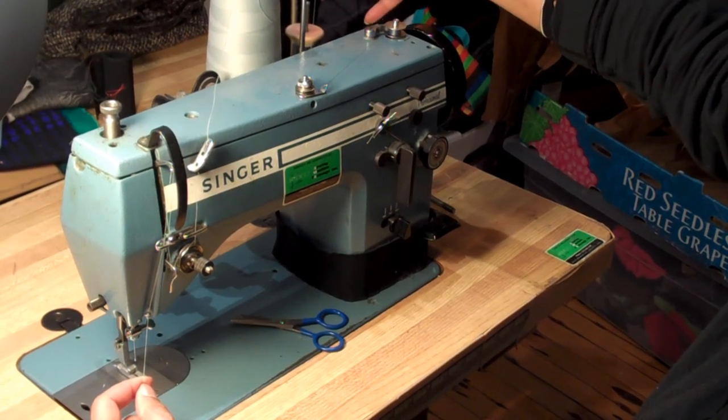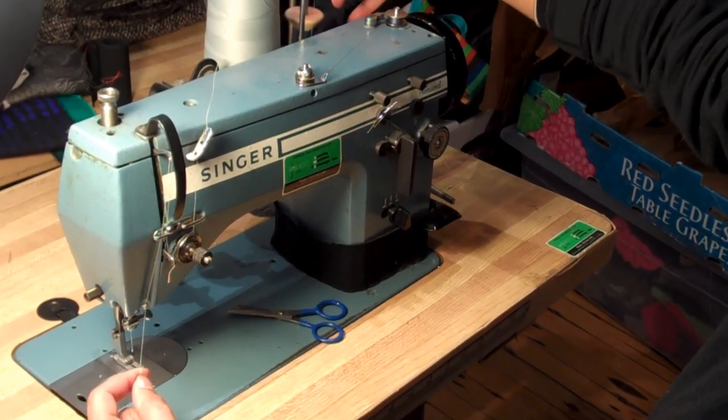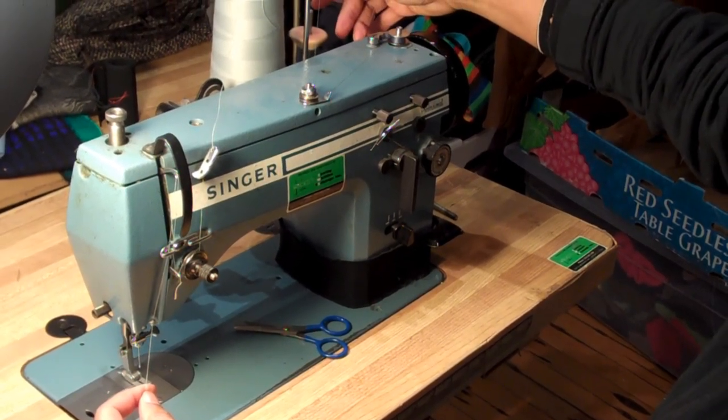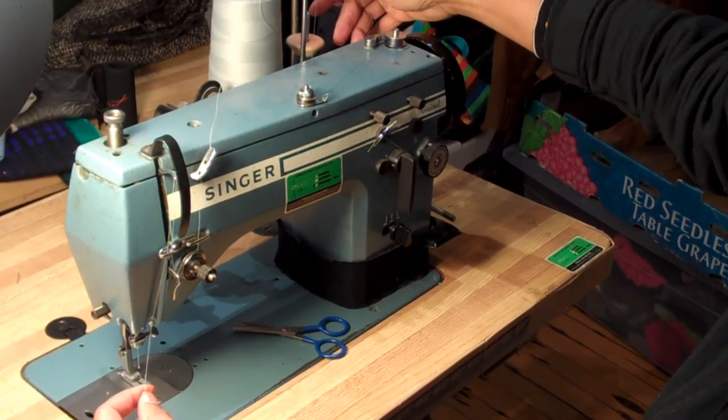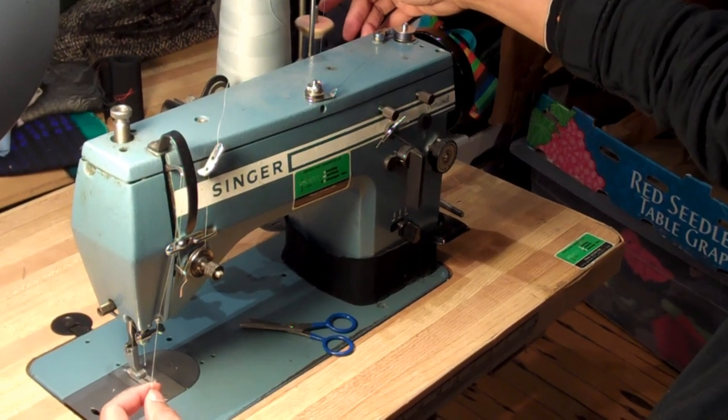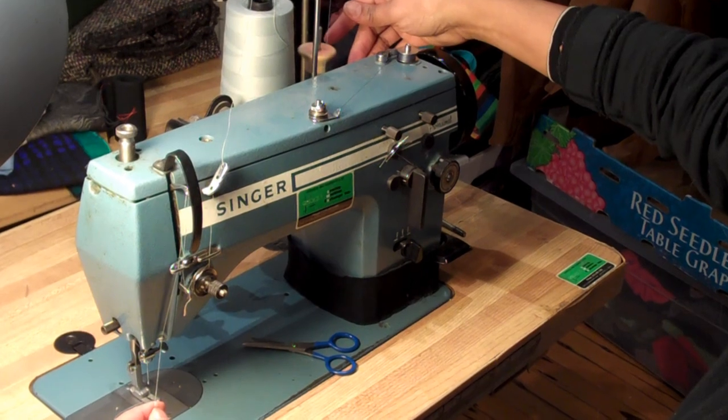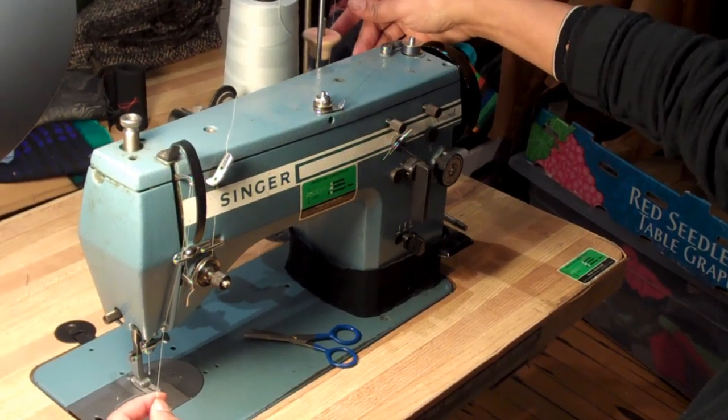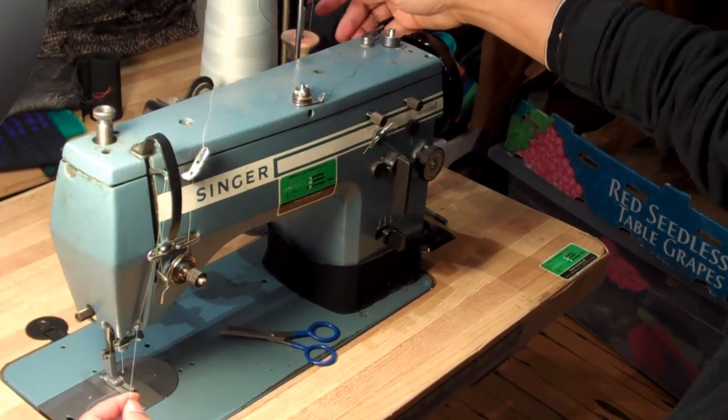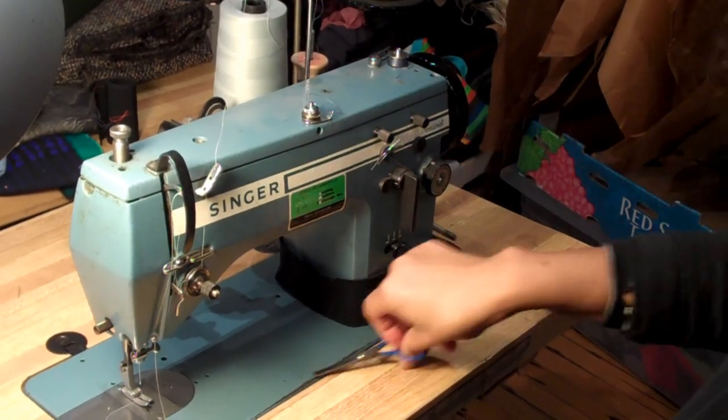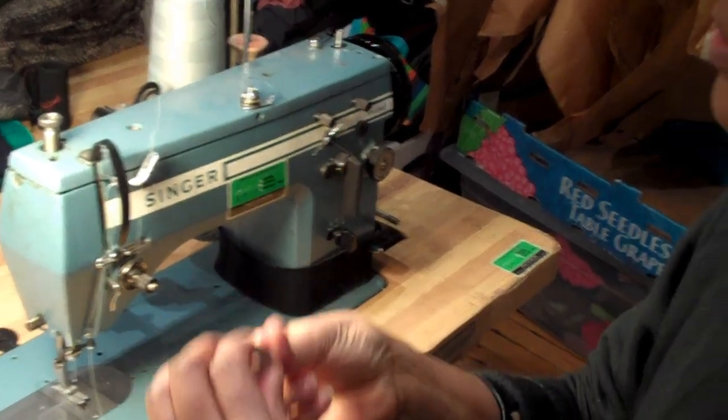I'm only holding this because the thread was catching on the spool. Normally, you wouldn't have to hold that thread. And if this does what it's supposed to do, it will stop right when... Yep, there it goes. Right when it's full, it releases. So, then you cut that, and you have a nicely new-wound bobbin.